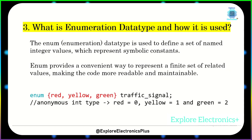What is the enumeration data type and how is it used? The enum data type is used to define a set of named integer values which represent symbolic constants. Enum provides a convenient way to represent a finite set of related values, making the code more readable and maintainable.